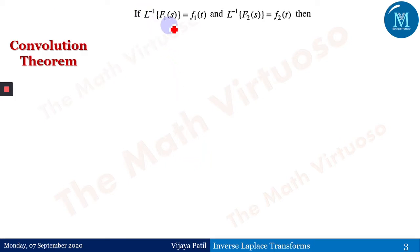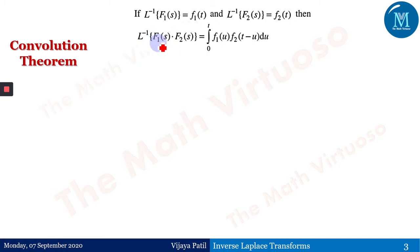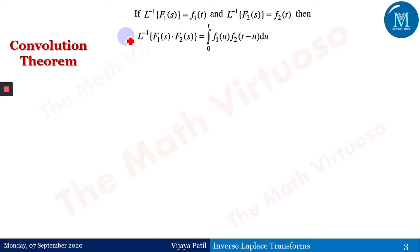The statement goes as: if the inverse Laplace of F1(s) is f1(t), and the inverse Laplace of F2(s) is f2(t), then the inverse Laplace of F1(s)·F2(s) equals the integral from 0 to t of f1(u)·f2(t−u) du. This is known as the convolution theorem.